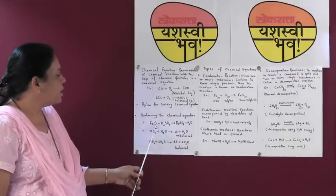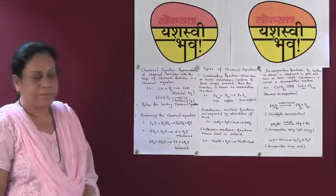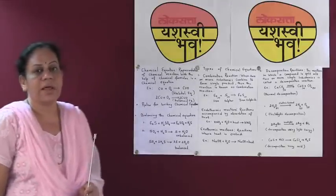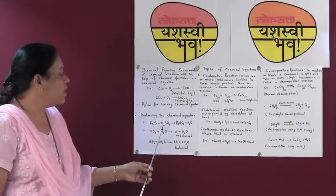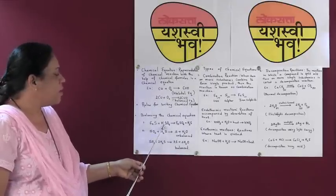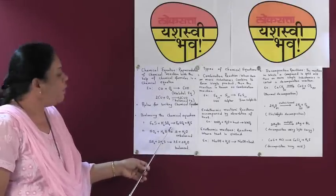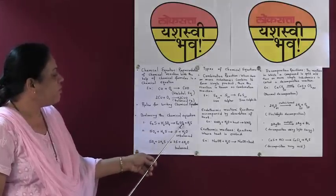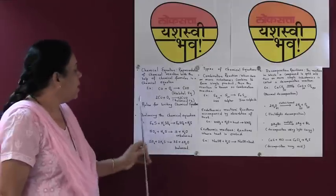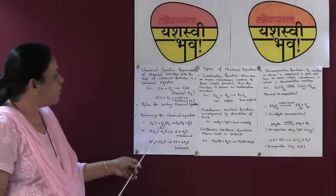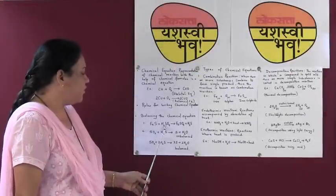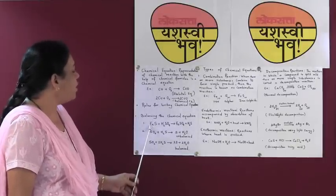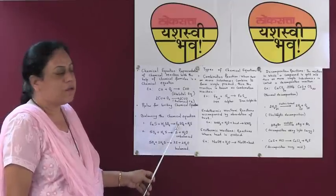The atoms involved are iron, sulphur, hydrogen, and oxygen in both the reactants and the products. Now let us count the number of atoms on both sides. Starting with the atom having maximum number — oxygen: on the left hand side there are 4 atoms of oxygen, and on the right hand side we also have 4 atoms of oxygen. There are 2 atoms of sulphur on both sides, and 1 atom of iron on both sides.